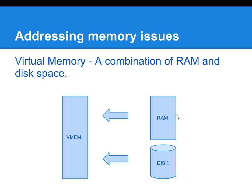Swap is made up of RAM and disk. You can add a disk device or a file on disk. If you type swap -l, it will tell you what the current swap configuration is — whether it's coming from a file or a disk device. The disk and the RAM together make up the virtual memory, which is the swap.